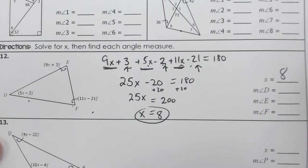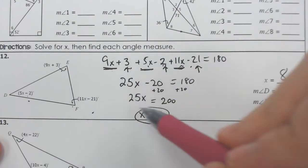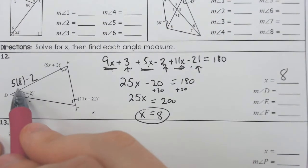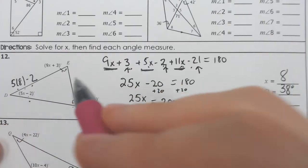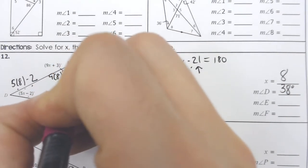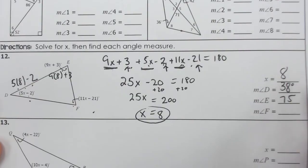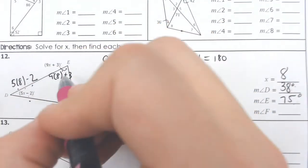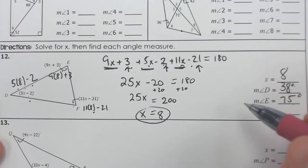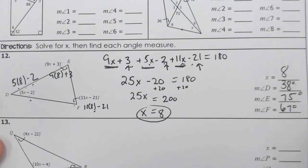So once I have 8, now all I have to do is find angle D, E, and F. All I have to do is plug in 8 for every single angle. So I'm going to start with angle D. It says 5 times 8 minus 2. That is 40 minus 2, which is 38. Then I'm going to plug in the 8 for angle E. 9 times 8 plus 3 is 72 plus 3. 72 plus 3 is 75. And now from here, you got options. You could either take the two angles that we do know away from 180, or you can just plug in 8 for the x. I think it's going to be a little bit easier in this case to plug in 8 for x. 11 times 8 is 88 minus 21 is 67 degrees. And we have our three answers that we needed.